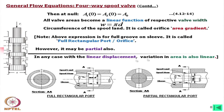In any case, with linear displacement, variation in area is also linear — this linearity is essential and is why other port configurations are avoided. If the corners are slightly rounded, the area-displacement relationship is not perfectly linear at the very beginning, but this can be neglected for practical calculations.